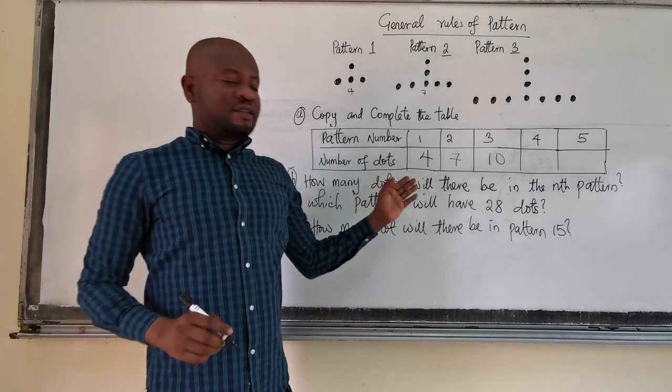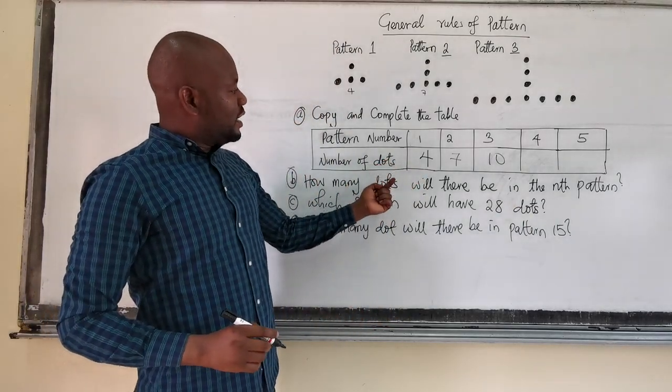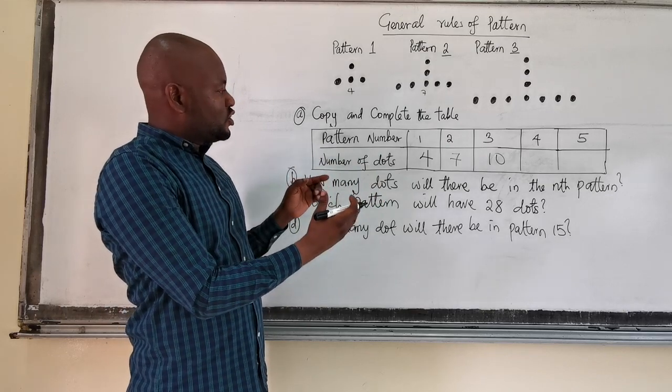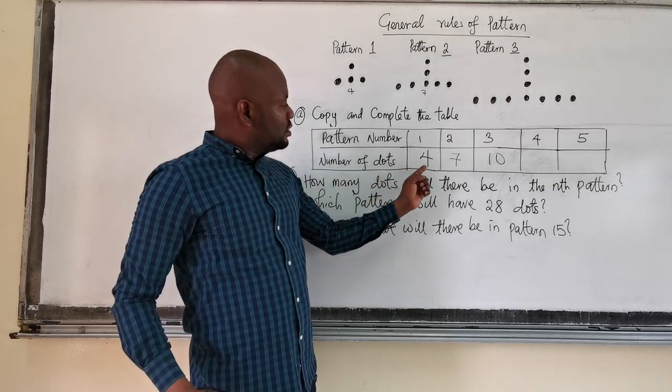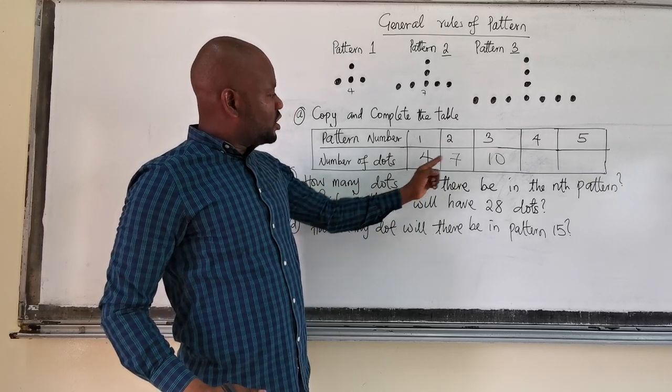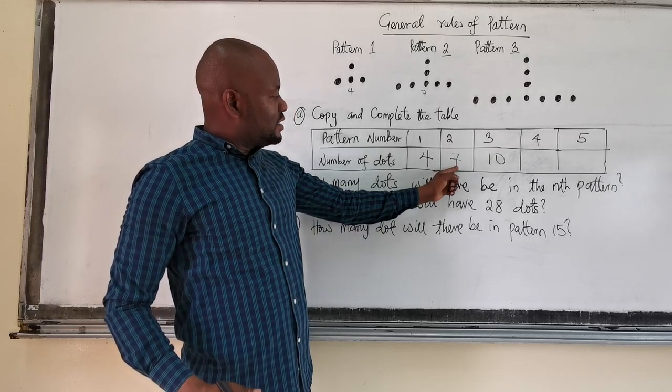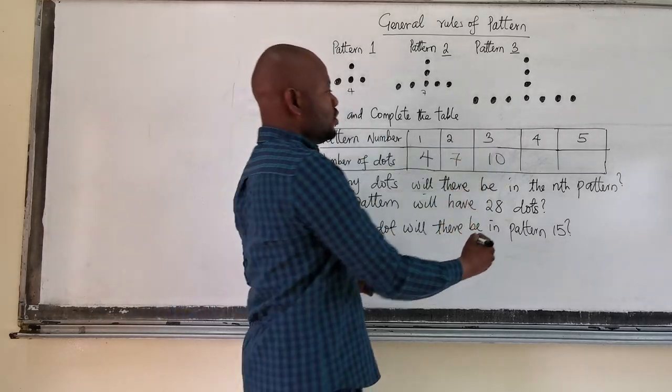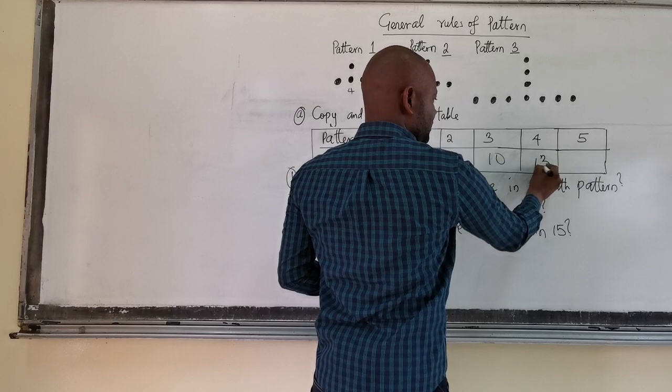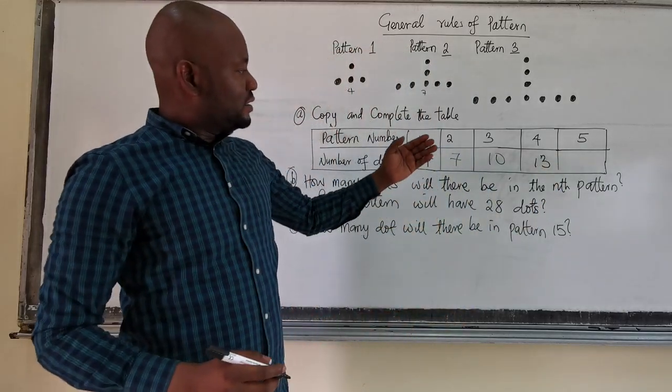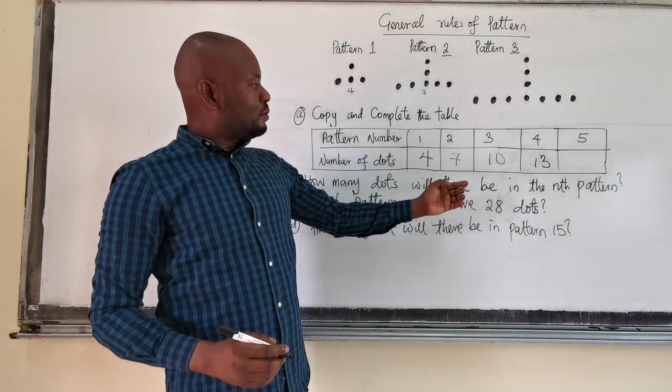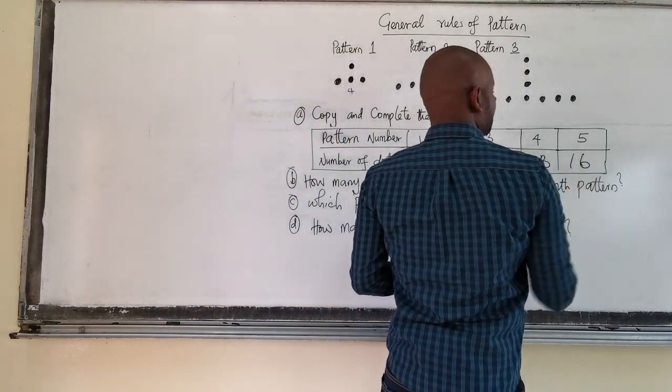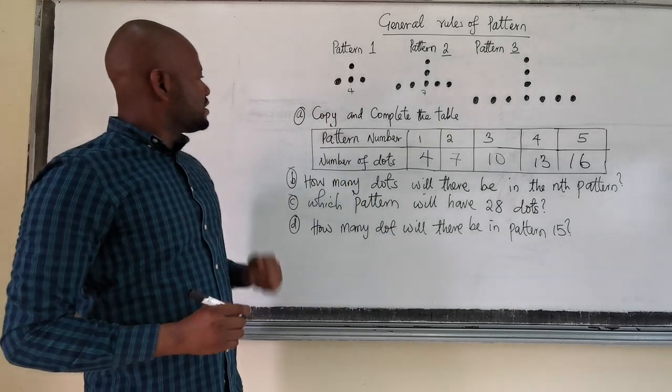Looking at this now, you can see that they have a common difference. A common difference of 3. Because 4 plus 3 is 7. 7 plus 3 is 10. Then 10 plus 3, that means the fourth one will be 13. And the 13 plus 3, the fifth one will be 16. So this is the table.